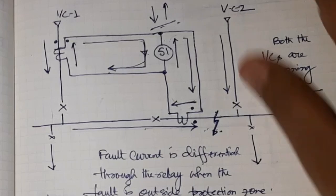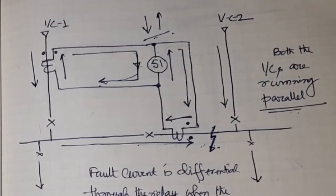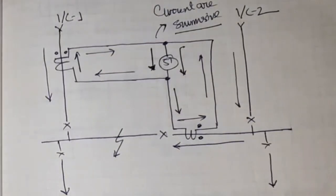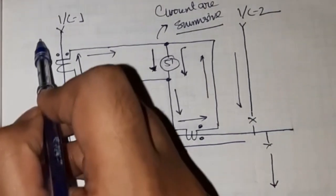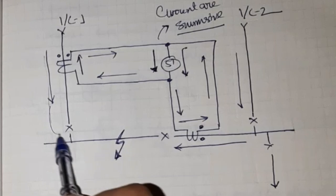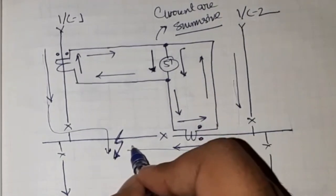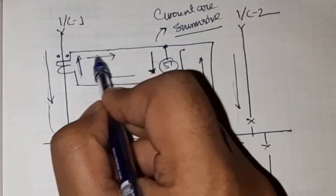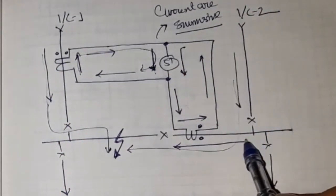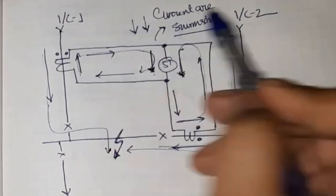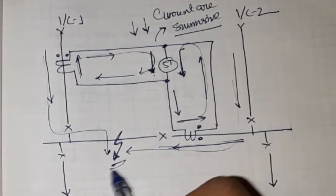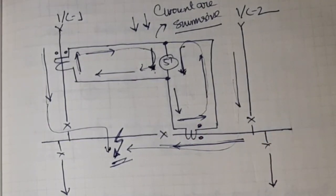Now we will see what happens for a fault inside the protection zone. When there is a fault inside the protection zone, the current from Incomer 1 flows downward and from Incomer 2 also flows downward — both currents are additive. So for a fault inside the protection zone the relay sees a higher summation current, and for a fault outside the zone the relay sees a lower differential current. Therefore the relay will pick up for a fault inside the protection zone.